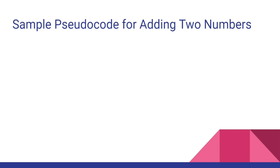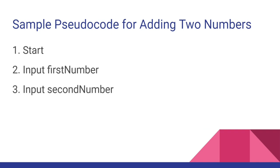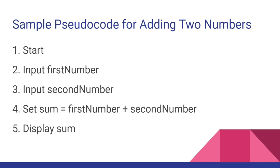We are going to now do the practical aspects. We are going to write a simple pseudocode for adding two numbers. You start writing 'start' as your starter, then input the first number, then input the second number, then set sum to first number plus second number, then display the sum, then end the program.